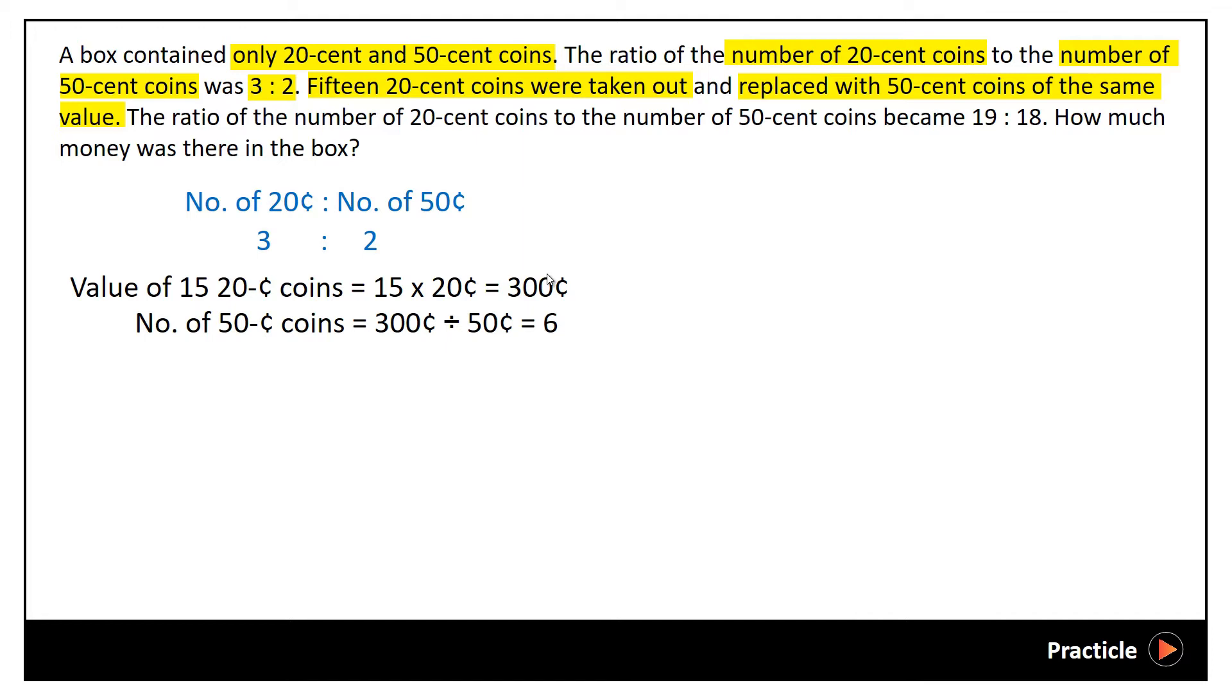So in other words, we know that 15 20-cent coins were actually taken out and exchanged with 6 50-cent coins over here. Moving on, we also know that the ratio of the number of 20 cent coins to the number of 50 cent coins then became 19 is to 18. So this is what we know. And we're supposed to find how much money there was in the box.